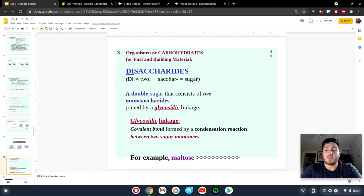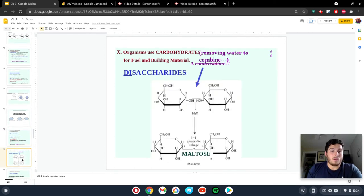This is a covalent bond that is formed during the condensation reaction. Here's an example of this. We have two simple sugars, two glucoses. We are going to use a glycosidic linkage in order to connect them together, and we will create maltose. How do you do this? This is a condensation reaction. You're going to remove a water to link these two things together.